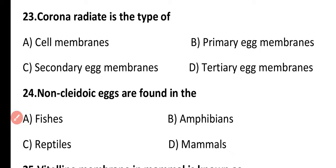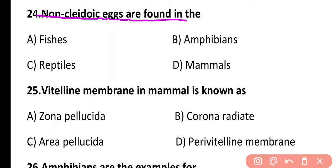Question 24. Non-cliodic eggs are found in fishes, amphibians, reptiles, or mammals? The correct answer is option C. Amphibian eggs are non-cliodic types of eggs, meaning they have no leathery shell.